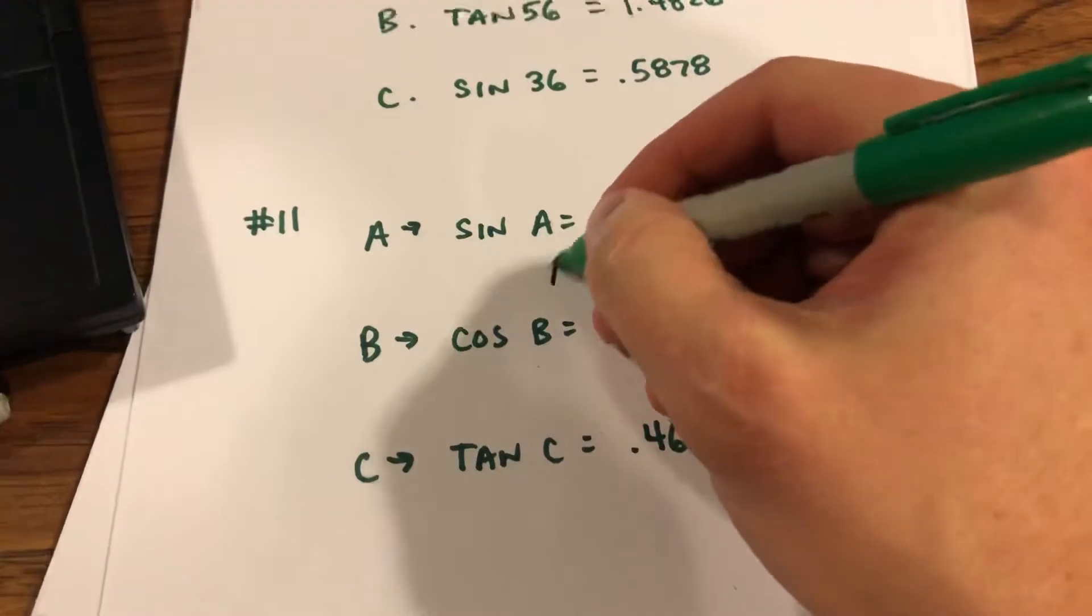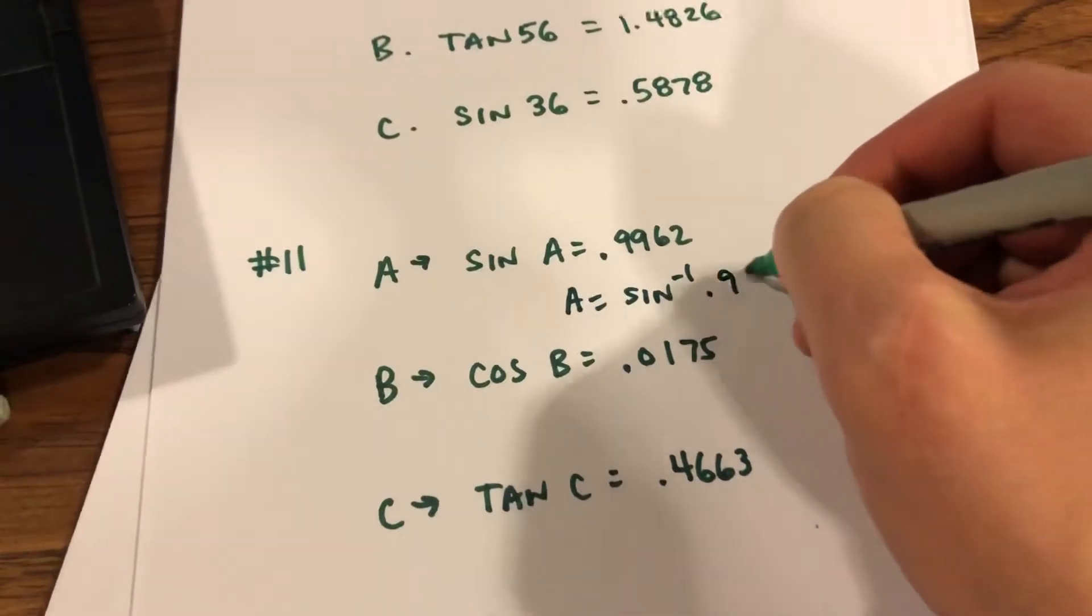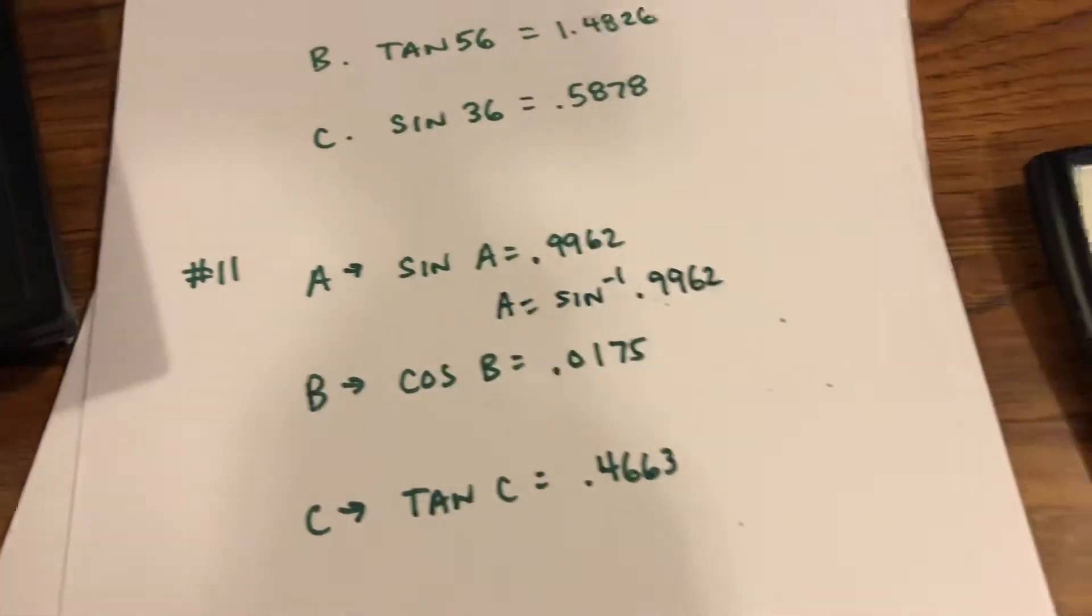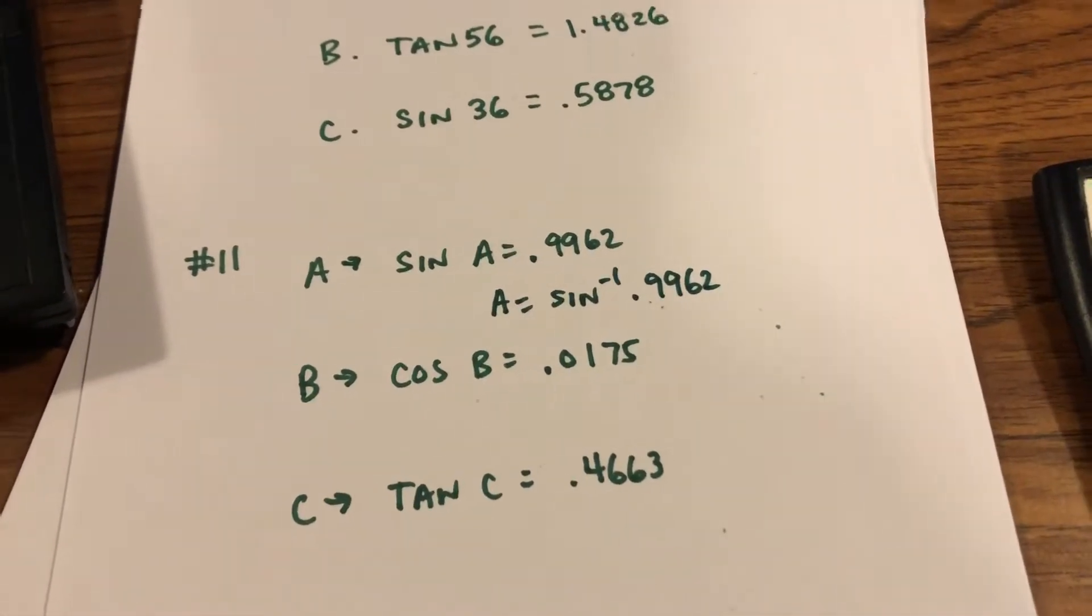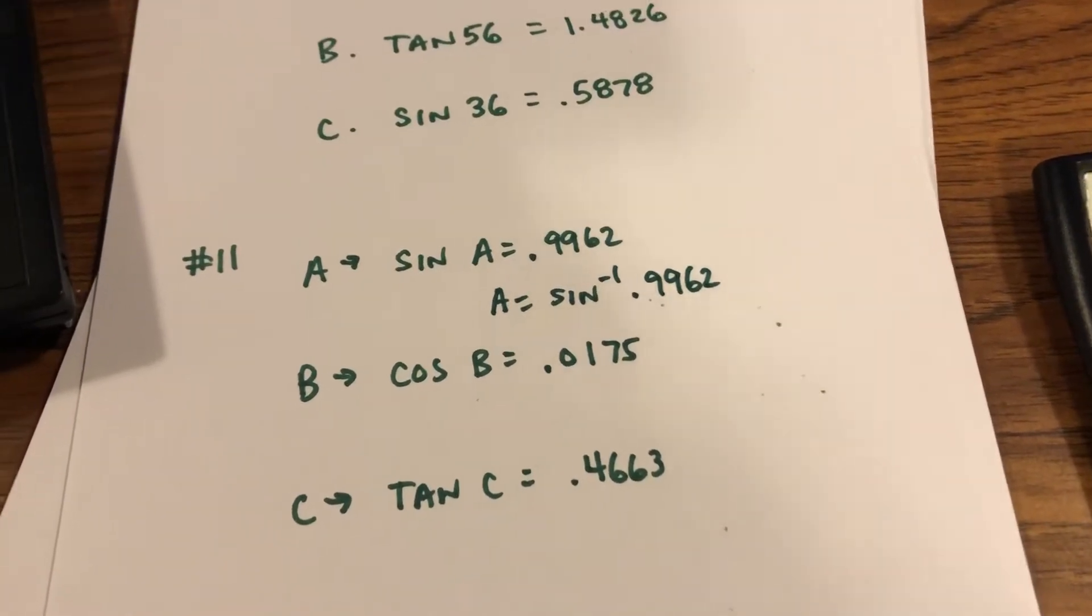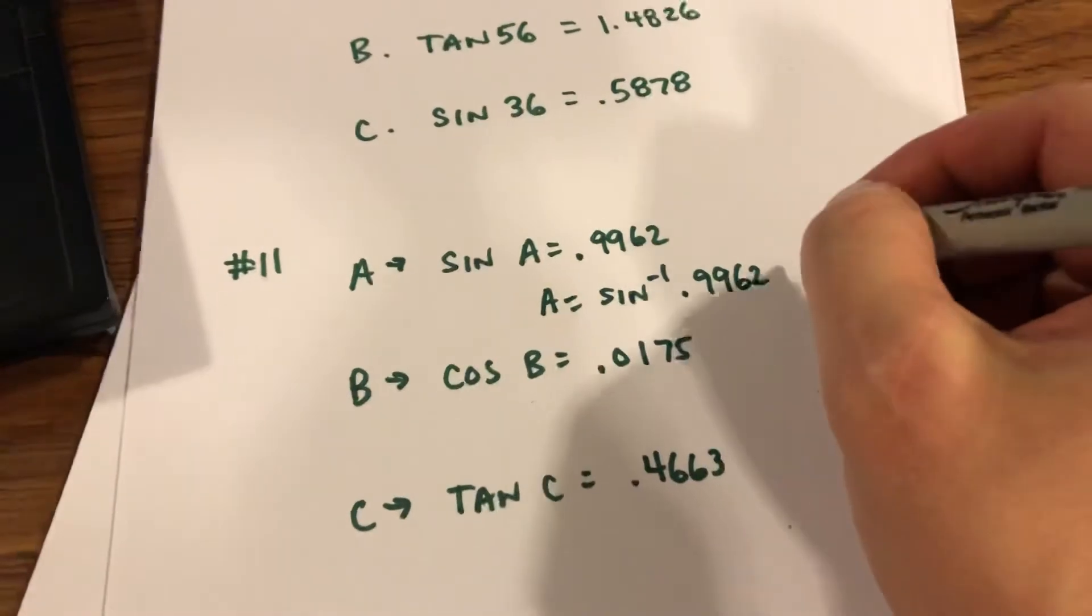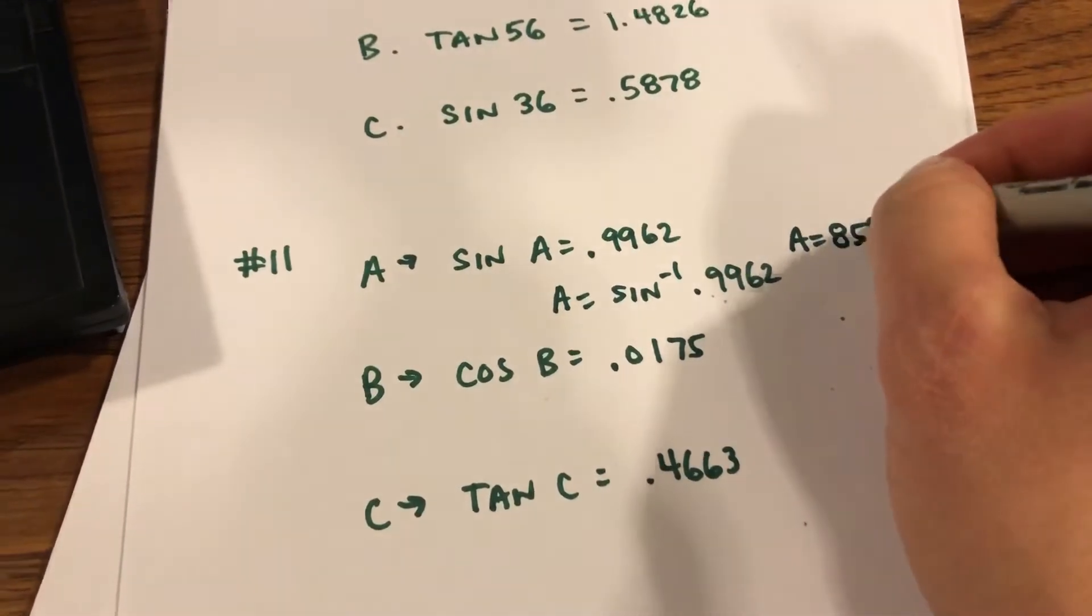So if I'm finding A here, this is going to be the inverse sine of 0.9962. When I type that into my calculator, second function sine 0.9962, that gets me 85 degrees. So A in the first one is 85 degrees.